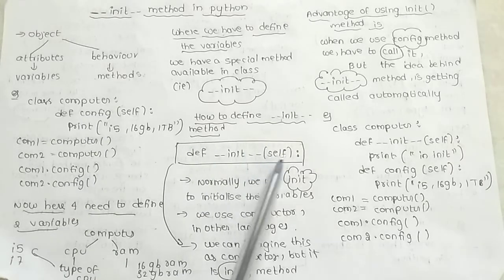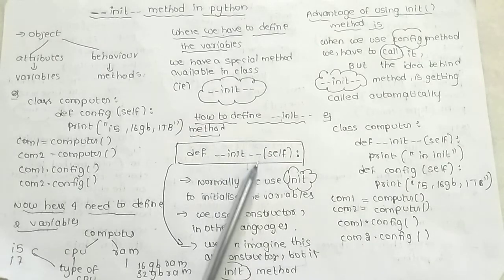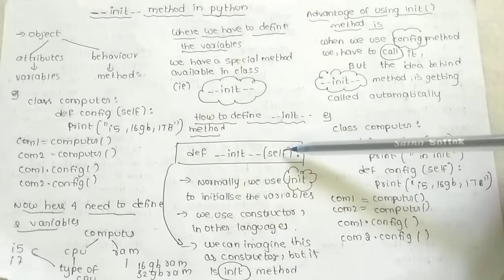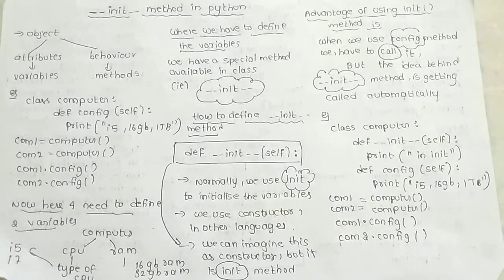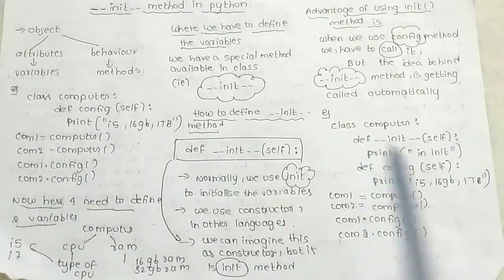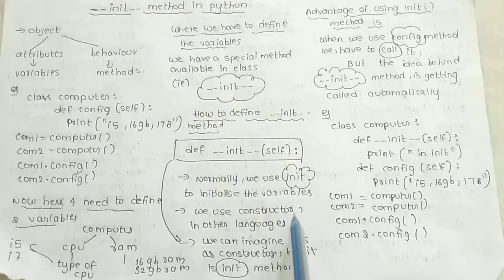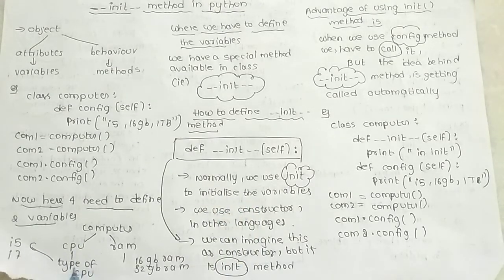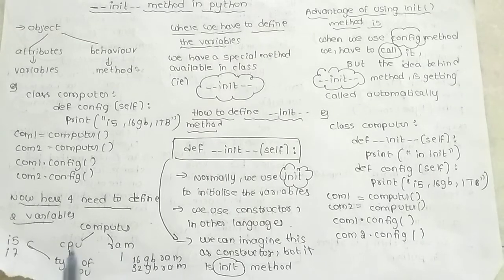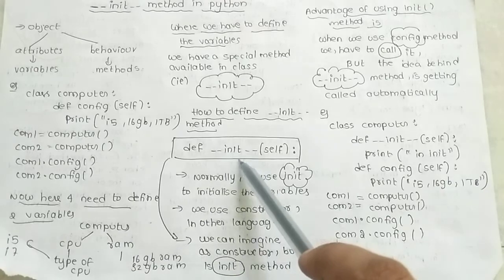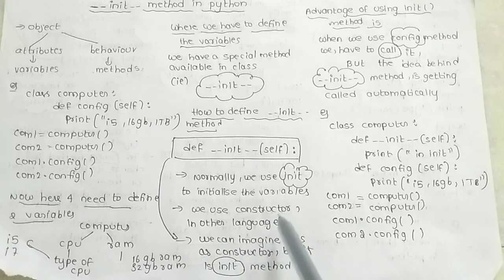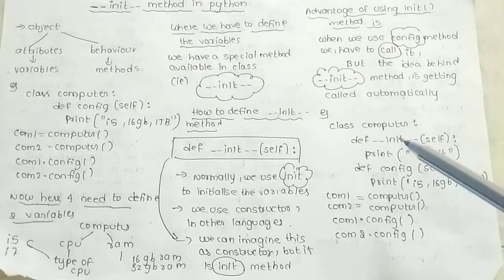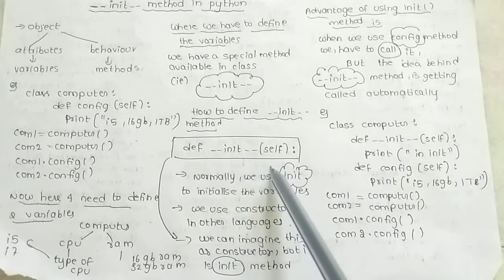Using double underscores: how do you explain self? We use the object as self. In general, we use the init method to initialize the variables. If I have the CPU type and RAM, I will initialize them in the init method. In other languages, we use constructors.